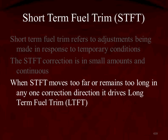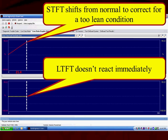When the short-term moves too far in one direction — adding fuel or subtracting fuel — or it stays too long in any one correction direction, that is what drives long-term fuel trim to move. When we look at this graph at the top, the short-term fuel trim is shifting from normal. That means the oxygen sensor reported lean. The short-term is commanding additional fuel to correct for that lean condition, and when we look at long-term, it did not react immediately.